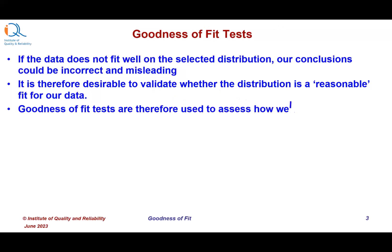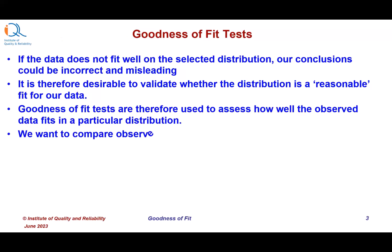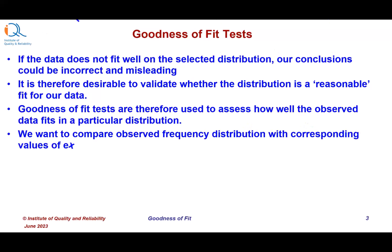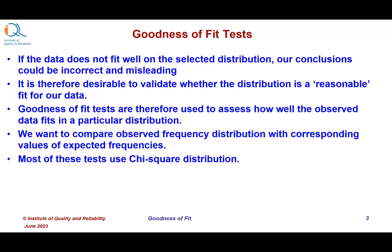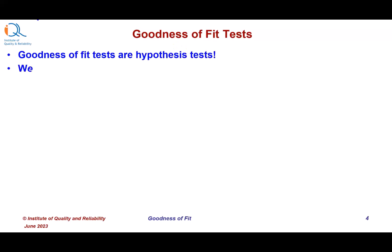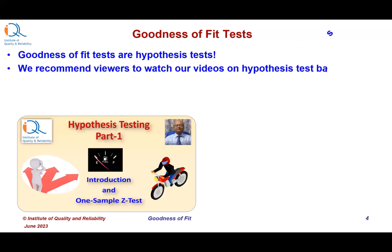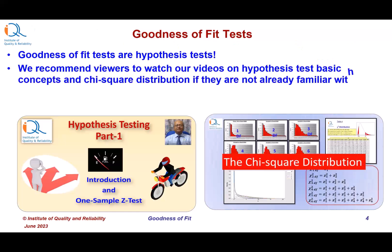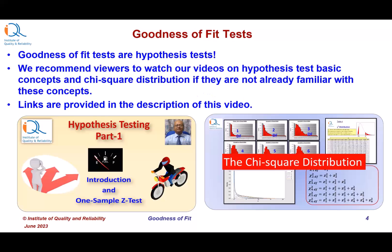Goodness of Fit Tests are used to assess how well the observed data fits a particular distribution. We want to compare observed frequency distribution with corresponding values of expected frequencies. Most of these tests use chi-square distribution. The procedure for performing Goodness of Fit Tests is explained in this video with an example illustration. Goodness of Fit Tests are Hypothesis Tests. We recommend viewers to watch our videos on Hypothesis Tests basic concepts and chi-square distribution if they are not already familiar with these concepts. Links are provided in the description of this video.